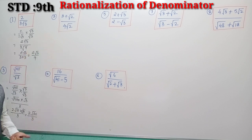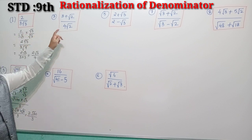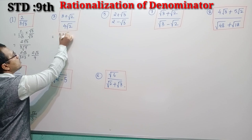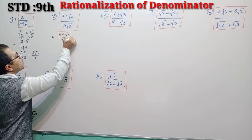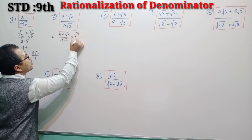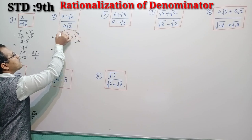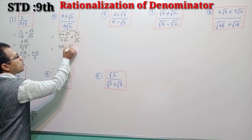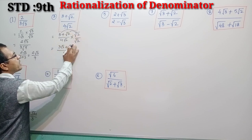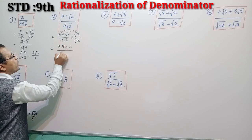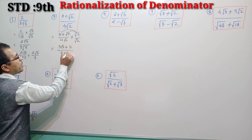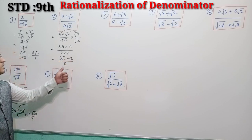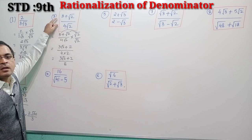Moving to the third question: (3√2 + 4) upon √2. Multiply numerator and denominator by √2. Using distributive property in the numerator: 3√2 × √2 = 3 × 2 = 6, and 4 × √2 = 4√2. Denominator: √2 × √2 = 2. So the result is (3√2 + 2) over 8. This is the simplified form of the fraction in radical form.